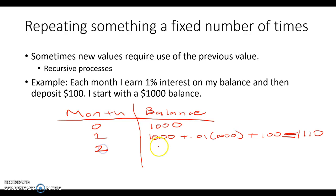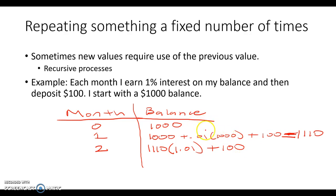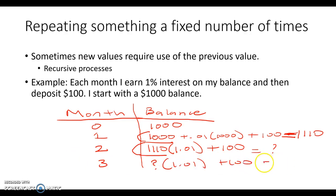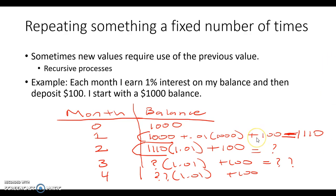Coming into month two, I'm going to have my $1,110, and I can multiply that by 1.01, then add my $100. As you can see, in order to know this value, it came from the previous month. So coming into month three, I take that number, multiply it by 1.01, and add $100. Month four, same thing — multiply by 1.01 and add $100. This is an iterative process requiring knowledge of the previous step.